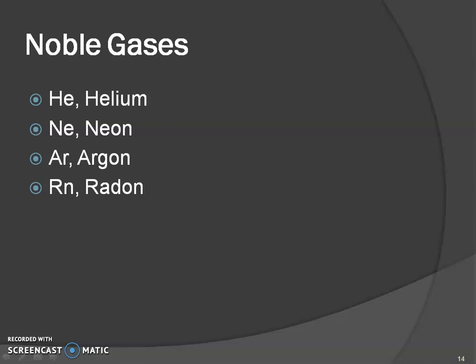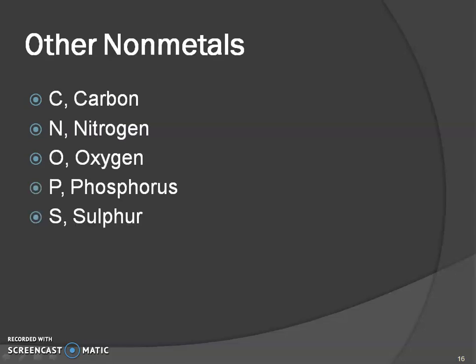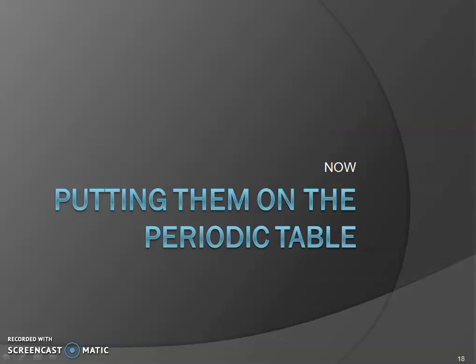The first letter of a symbol needs to be capitalized and the second one, if there is one, is lowercase. Other metals: Al — Aluminum, Sn — Tin, Pb — Lead. Pb is like peanut butter, and I always think when I eat peanut butter it feels like lead in my stomach because it's real heavy. Other non-metals: C — Carbon, N — Nitrogen, O — Oxygen, P — Phosphorus, S — Sulfur (which can be spelled -ur or -er at the end). Metalloids: B — Boron, Si — Silicon, As — Arsenic.